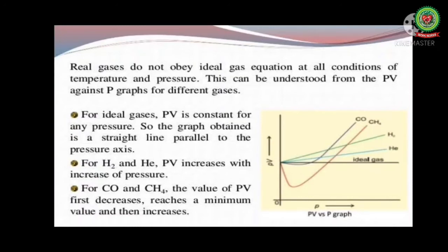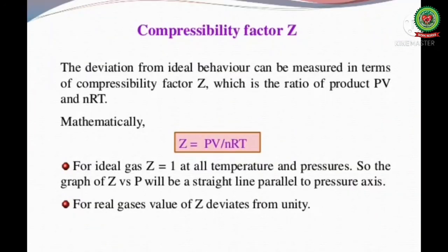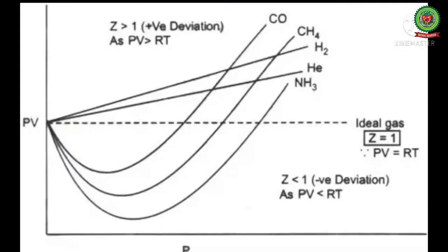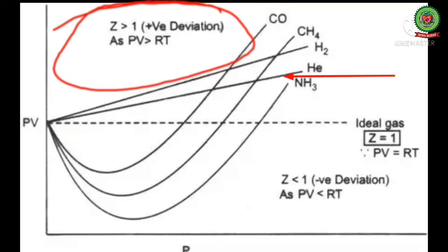For ideal gases the value of Z, that is compressibility factor, which is equal to PV upon nRT, is 1, whereas for real gases the value of Z is not equal to 1, so either it is more than 1 or less than 1. If Z is greater than 1, it means the gas shows positive deviation from ideal behavior and is less compressible.